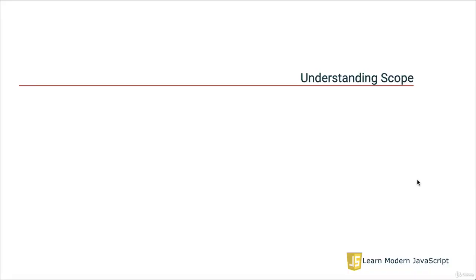It's important to understand scope in JavaScript in order to understand what your code is doing and to take full advantage of all of its capabilities. In this video, we will use several examples to help illustrate scope and the scope chain. In this discussion, we'll focus on the keyword `var` and how it affects scope, and then we will look at `let` in the next topic. First, it seems important to define scope.